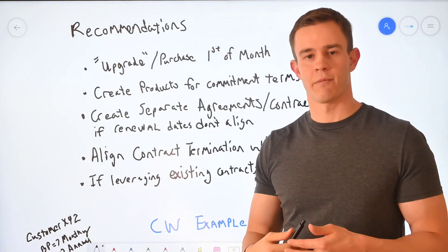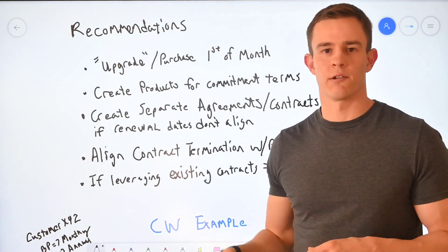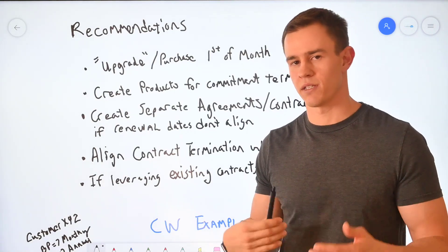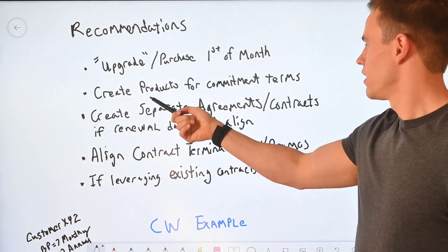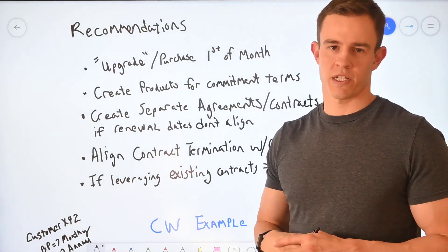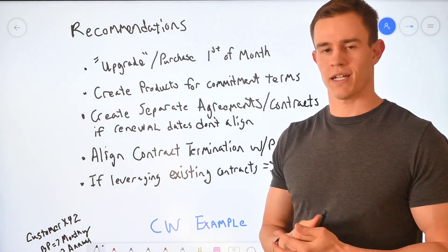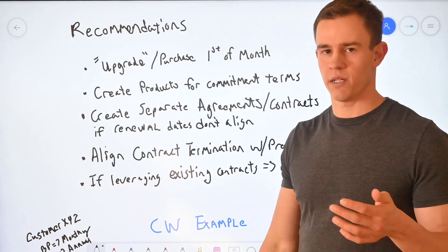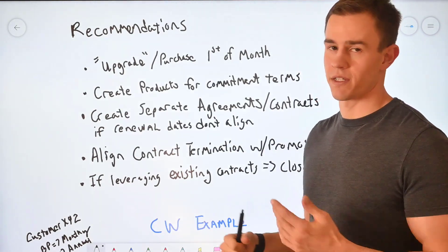Again, work with your distributor on that because they may have a way to schedule the decrements as well. So you don't have to like exactly come in on a specific day to decrease seats or anything like that. There should be a scheduling functionality. You want to create those products for the various commitment terms that you're going to support in your PSA tool in the product catalog. That way you can differentiate between the various price points between the commitment terms.